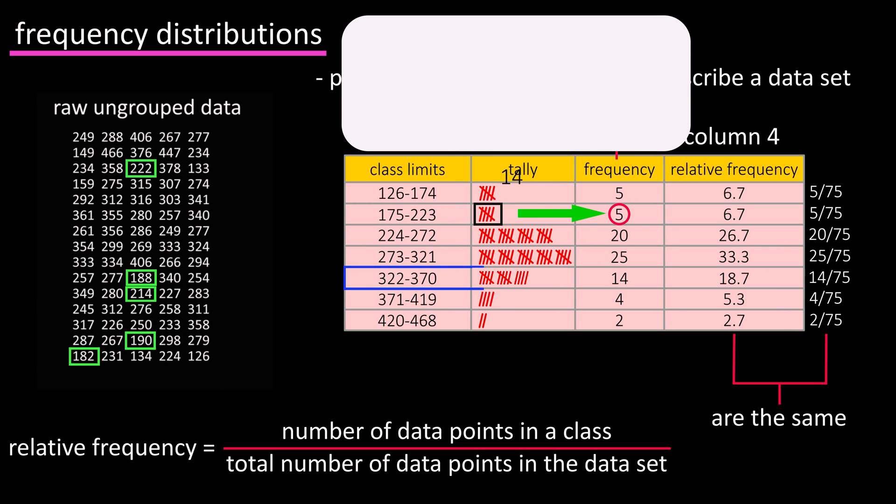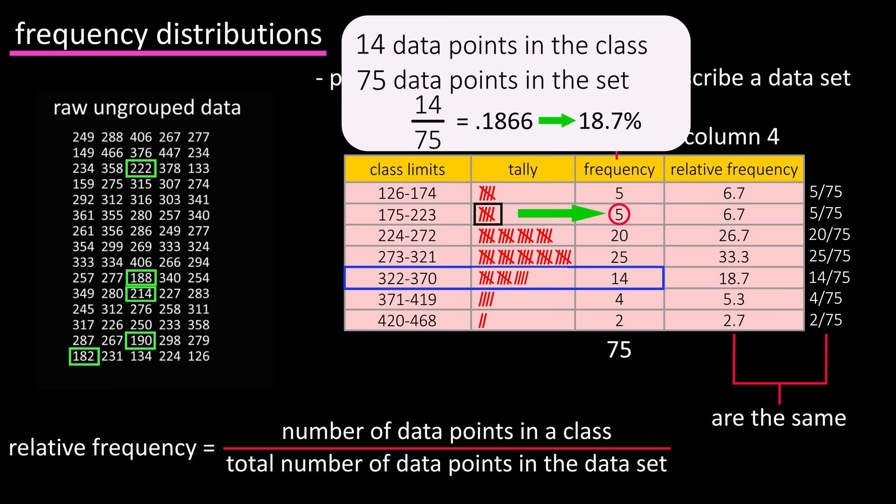So there are 14 data points that are in the 322 to 370 class. There are a total of 75 data points in the set. 14 divided by 75 equals 0.1866, which is actually a percentage. Rounding off, we get 18.7%.